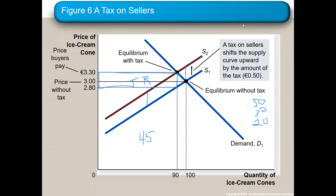Taxes, like price ceilings and price floors, create deadweight loss — that's this little triangle here. At $3 people are buying 90 cones, but when it goes up to $3.30, it drives about 10 consumers out of the market. Therefore, these people are no longer in the market, creating a deadweight loss. Anytime you see deadweight loss, you know there's inefficiency in the market.